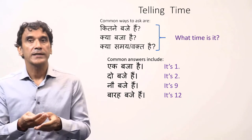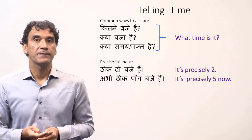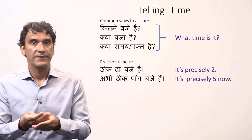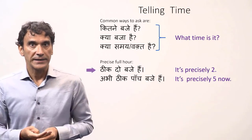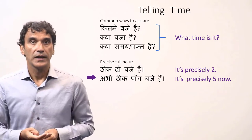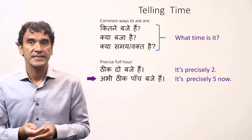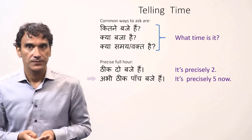You can add the word theek before the number to emphasize the exact full hour. Theek do baje hai — it is precisely two. Abhi theek paanj baje hai — it is precisely five now.